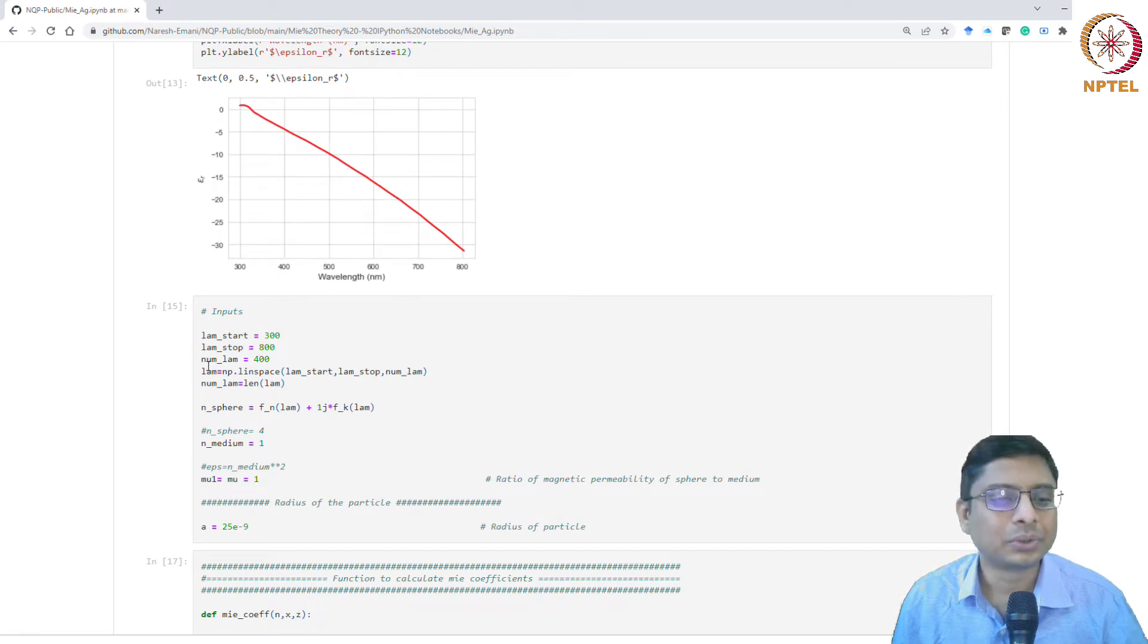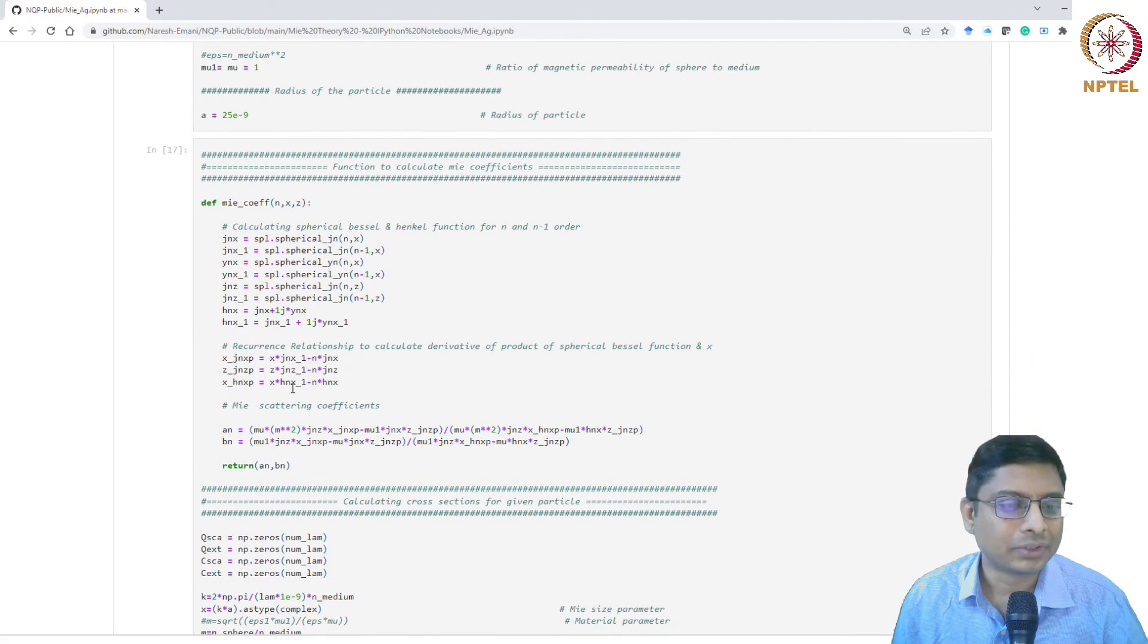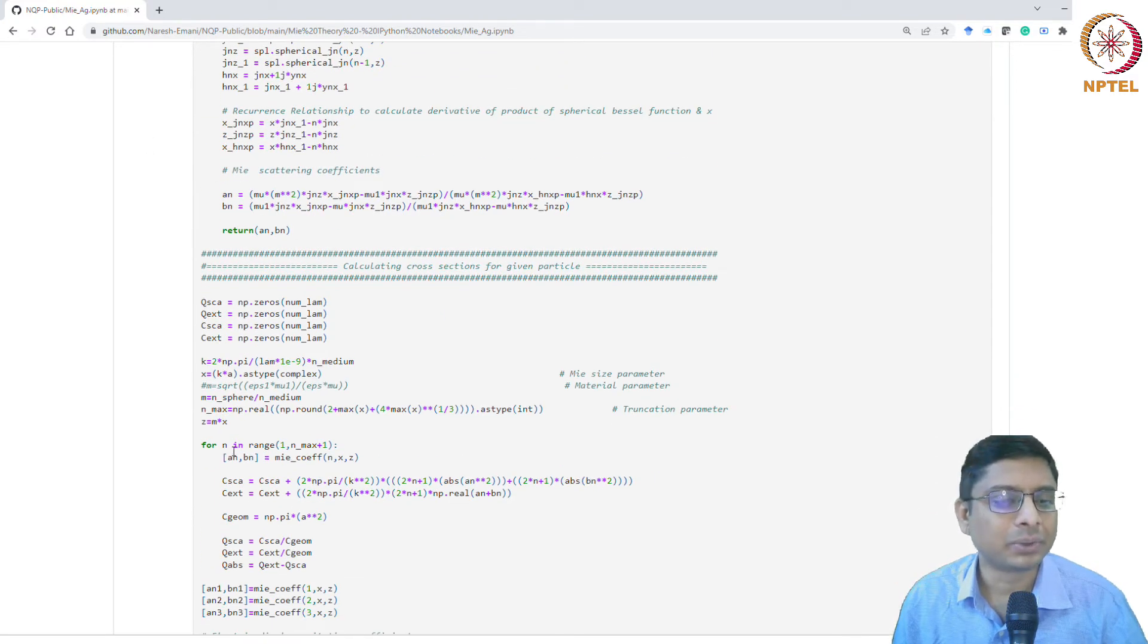Once we have the basic properties, the wavelengths and so on, you'll be able to interpolate the various lambdas and then calculate. This is where the Mie coefficient, this particular function—there's some annotation you can look at. The Mie coefficient is calculated here. Various Bessel functions are first calculated, then the recurrence relationships are applied, and finally you get the coefficients. The a and b coefficients are written by this function.